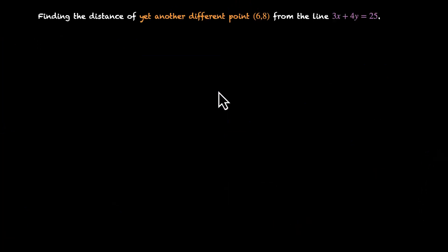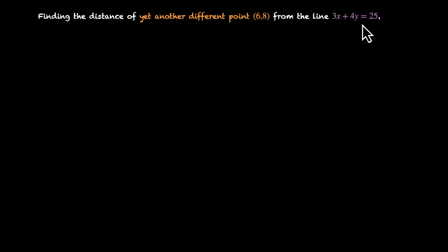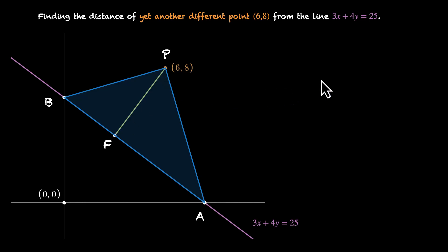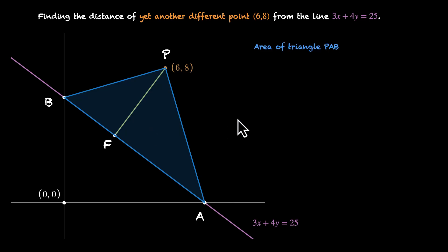Now let's take yet another different point: find the distance of point (6, 8) from the same line 3x plus 4y equals 25. This is not the other end of the rectangle — it's a different point. Let's plot things: x-axis, y-axis, origin, the line, our point P at (6,8), the x-intercept A, y-intercept B, and foot of perpendicular F. We need to find PF.